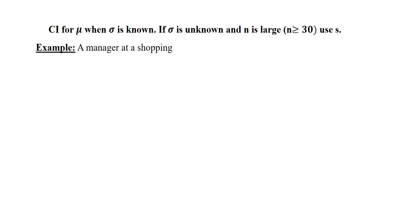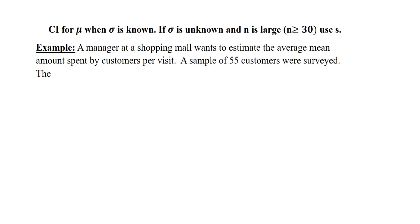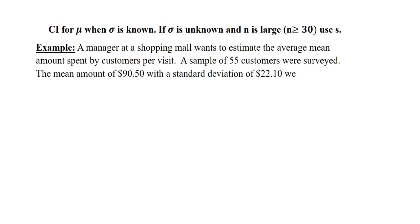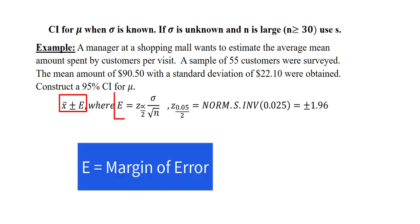Now we'll look at the example. A manager at a shopping mall wants to estimate the average mean amount spent by customers per visit. A sample of 55 customers were surveyed. The mean amount of $90.50 with a standard deviation of $22.10 were obtained. Construct a 95% confidence interval for the population mean. We're going to be using the formula X̄ plus or minus E, where E is my margin of error.